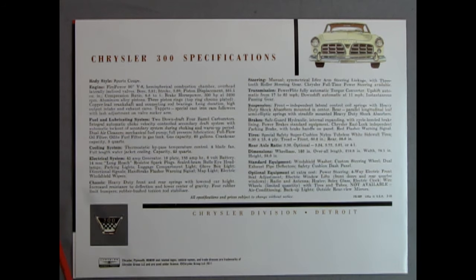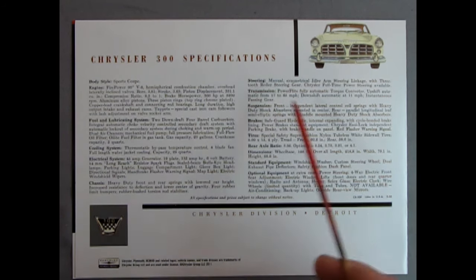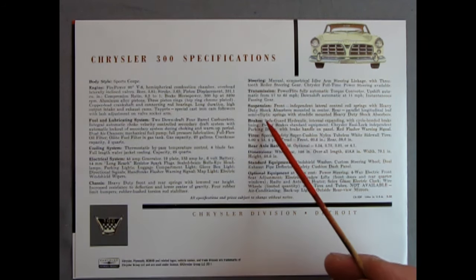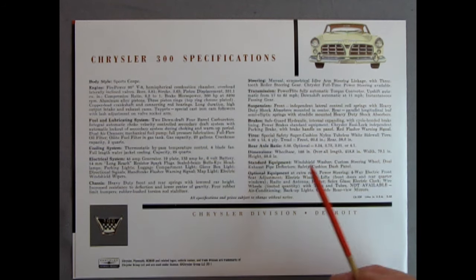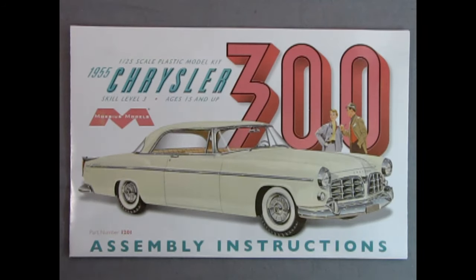In here it has the body style, which is a sports coupe, engine, fuel and lubricating system, cooling system, electrical system, chassis, steering, transmission, suspension, brakes, tires, rear axle ratio, dimensions, standard equipment, optional equipment. So really cool stuff that they include in this kit. And now let's actually get into the kit, starting with our instructions.